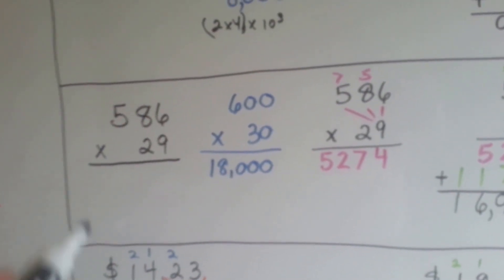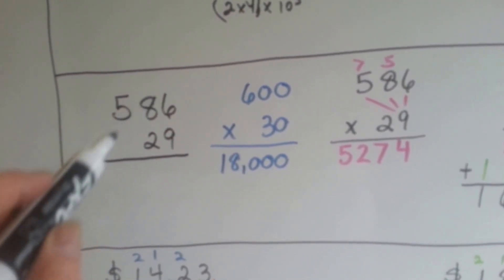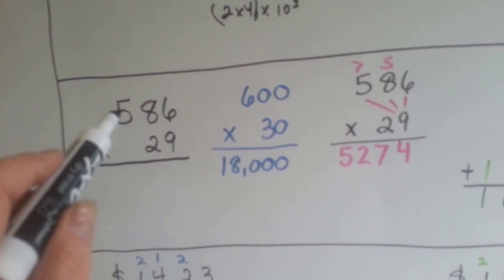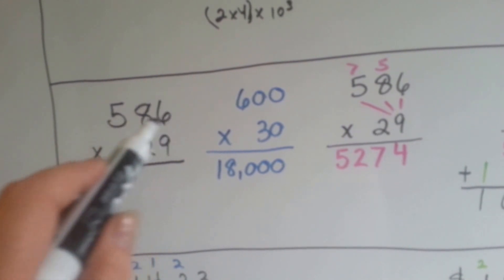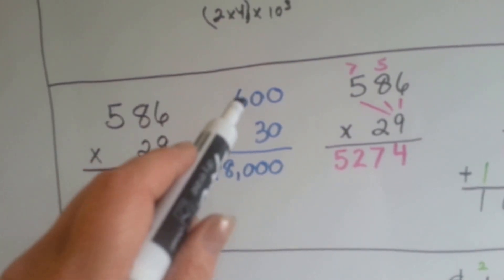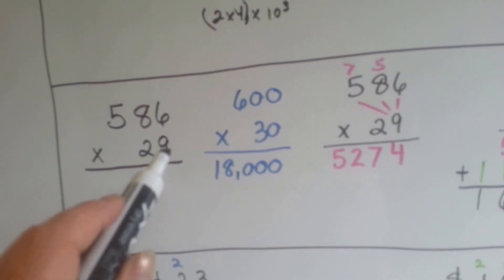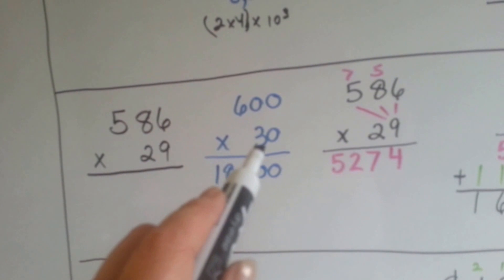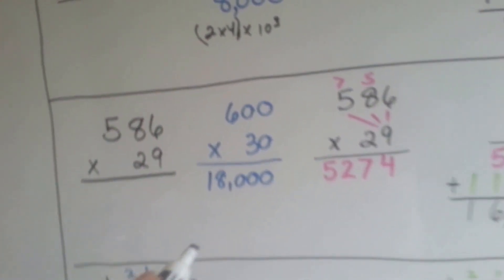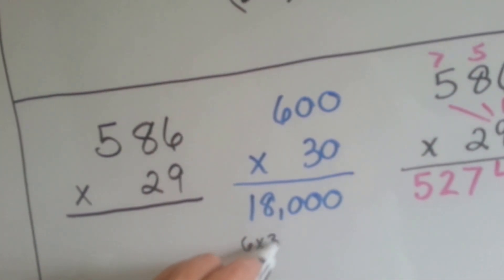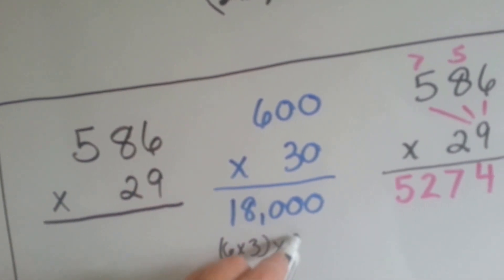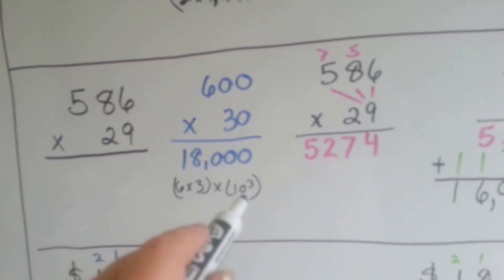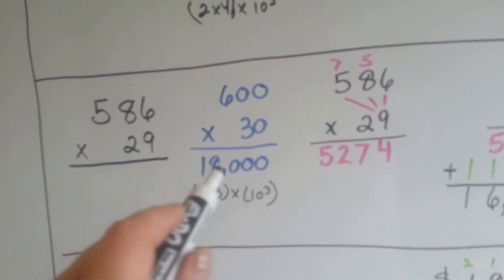Let's try it one more time. Here's our problem: 586 times 29. We're going to round it off first. The 8 tells the 5 to go up to the next biggest number, and when he's finished with his job, he and everyone else turns into zeros — so it turns into 600. For 29, the 9 tells the 2 to go up, and he becomes a 0. So now we've got 600 times 30, which is 6 times 3 times 10 to the 3rd power — 3 zeros — so we've got 18,000.